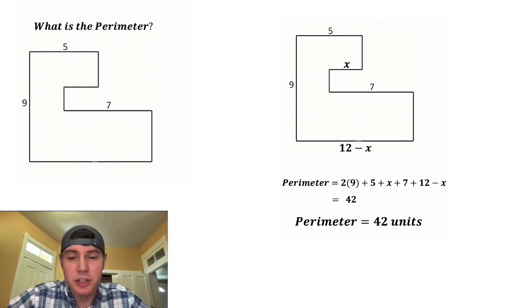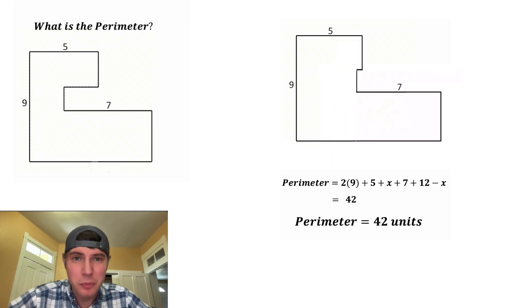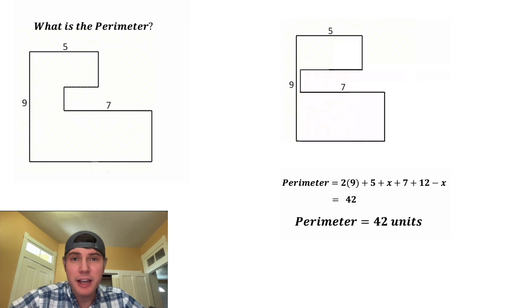And that is the answer to our question. The perimeter is 42 units. And it doesn't matter which one of these variations, they will all have a perimeter of 42. I really like how this animation adds a new level of perspective to the problem.